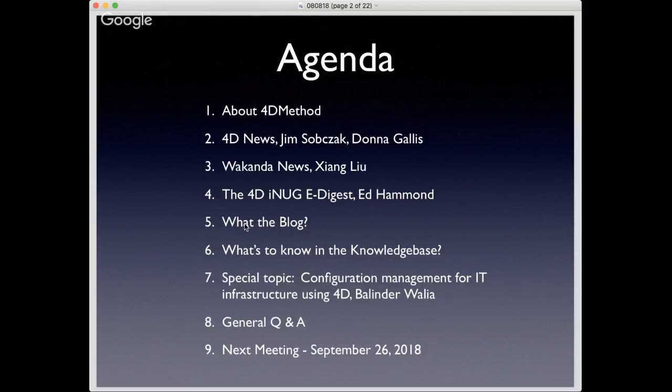We'll kick over to get some 4D news from Jim Sobchak and Donna Galis in San Jose, and then we'll get the news from Wakanda from Zhang Liu, and then we'll get the 4D iNug eDigest from Ed Hammond. I'll review some recent posts on the 4D blog in the 'What the Blog' segment, check out recent Knowledge Base articles, and then we'll get to the special topic: Ballander Walia joining us from London on configuration management for IT infrastructure using 4D. We'll have Q&A, and then talk about our next meeting on September 26, 2018.